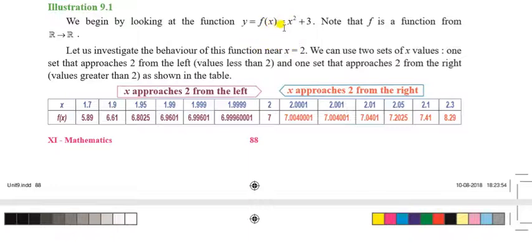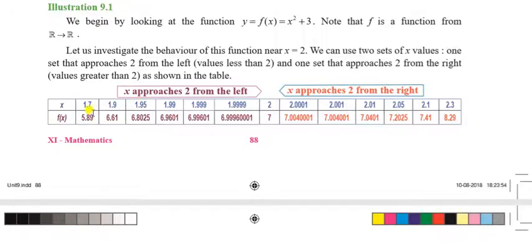To understand the behavior near x = 2, we use a table. As x approaches 2 from the left — values like 1.999, 1.99, 1.995, 1.9, 1.7 — we compute the corresponding function values. For x = 1.9999, f(x) = (1.9999)² + 3. Similarly for 1.99, 1.95, 1.9, 1.7 — for example, (1.7)² + 3 = 5.89. So as x approaches 2 from the left, these function values approach 7.